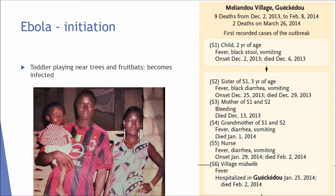The Ebola outbreak was initiated on the 2nd of December 2013, when a child was reported with fever, black stools, and vomiting. They had onset on the 2nd of December and died on the 6th — a very rapid onset to death. The family, likely without medical background, cleaned and cared for the infected toddler, resulting in constant contact and subsequent infection. Even a nurse handling the patient had no concept of how transmission was occurring. This is often the case in rural areas, where people may attribute the illness to witchcraft or political corruption and refuse formal healthcare from outside individuals.